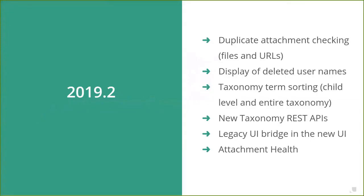Moving on to the latest releases: 2019.2 was released right at the end of December and came with several features. You can now do duplicate attachment checking, which works with files and URLs. When you delete a user from the system, the username can now be persisted with GDPR guidelines rather than showing a UUID or 'unknown user.' If you don't invoke those GDPR guidelines, you'll be able to see these usernames.